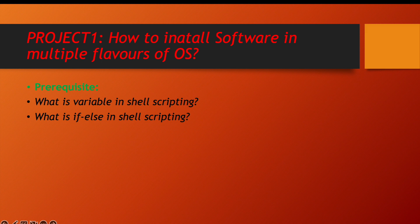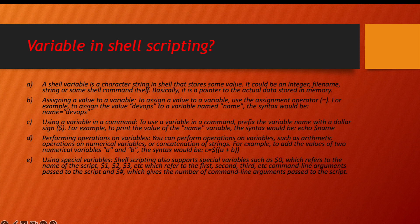Before going deep into the project, let us cover some prerequisites. We need to understand what a variable is in shell scripting and the basic syntax of if-else. A shell variable is a character or string that stores some values — it can be an integer, a file name, a string, or a shell command itself. Basically it is a pointer to actual data stored in memory. To assign a value to a variable we use the assignment operator.